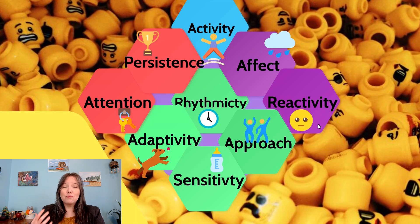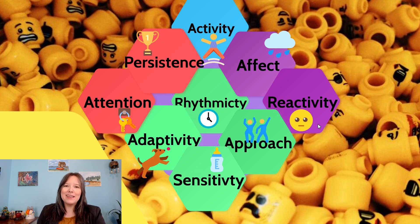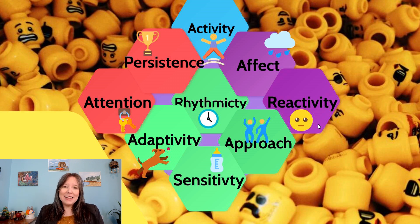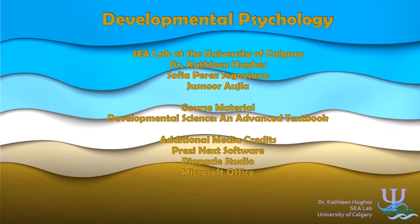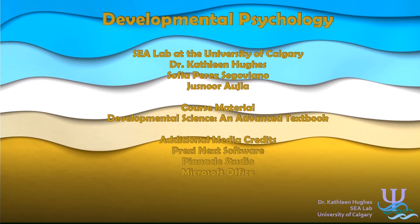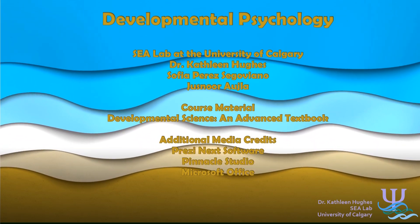So these nine dimensions of temperament can really help us describe individual differences in infants right from the start. Although we can use temperament to describe personality as we get older, we tend not to use this construct and instead use more modern theories of personality, which tends to emerge around age five. We can then measure things like the Big Five factors or HEXACO traits in children ages five and up.